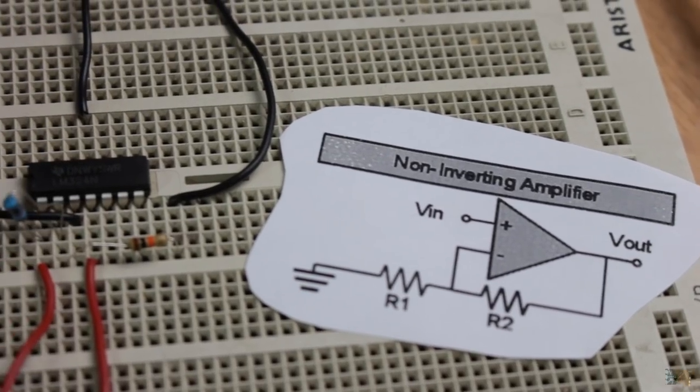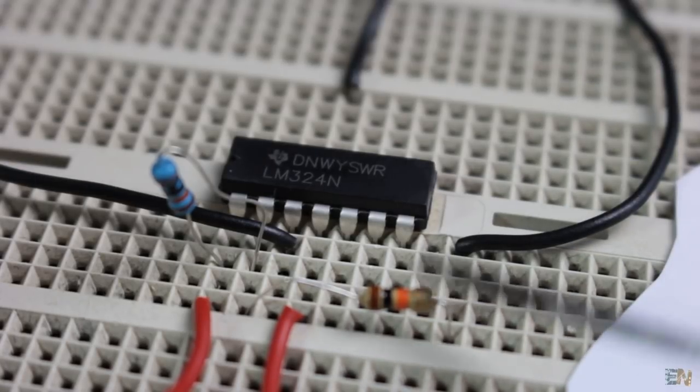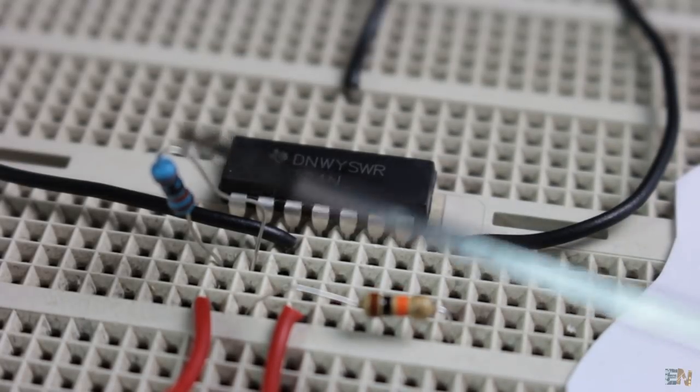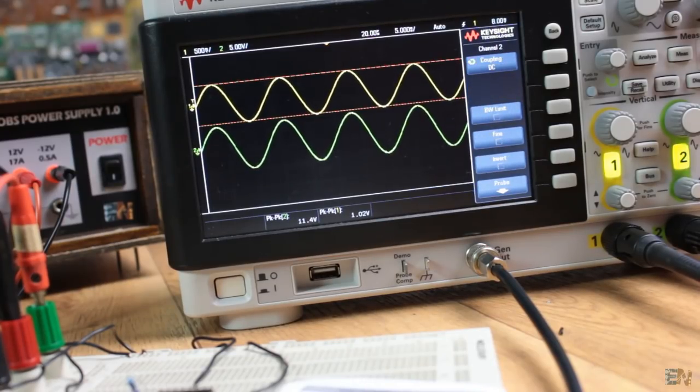I mount this example on the breadboard using 1 and 10 kΩ resistors for R1 and R2. I supply power to the amplifier and once again apply a sine wave at the input of 1V peak to peak.